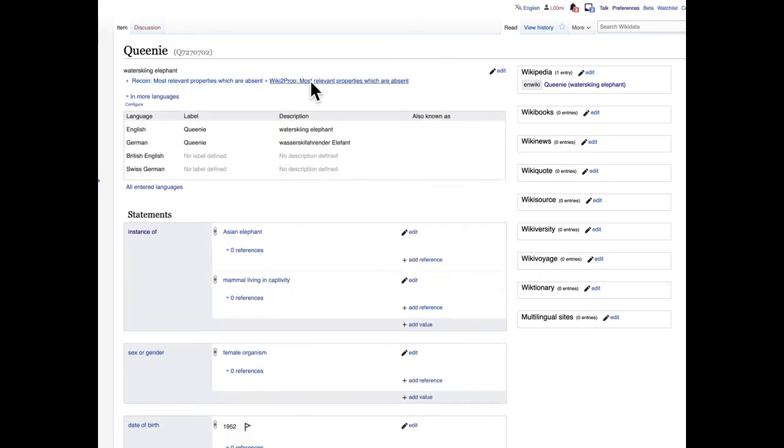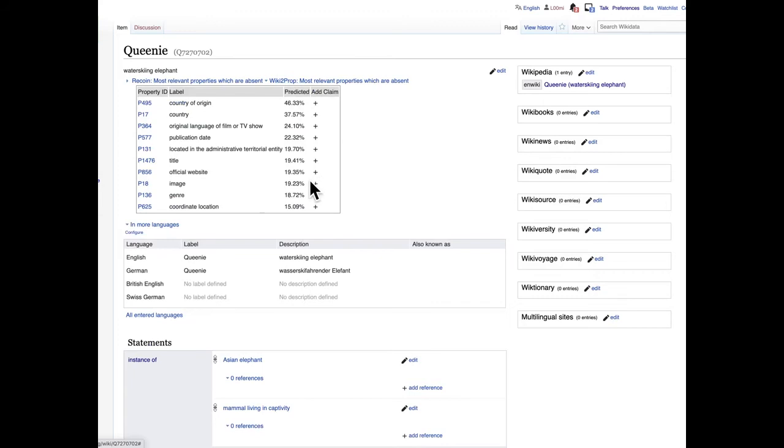And finally, with Wikidata prop which we introduce, we take the information out of Wikipedia and are able to propose a per entity prediction on which properties are still missing.